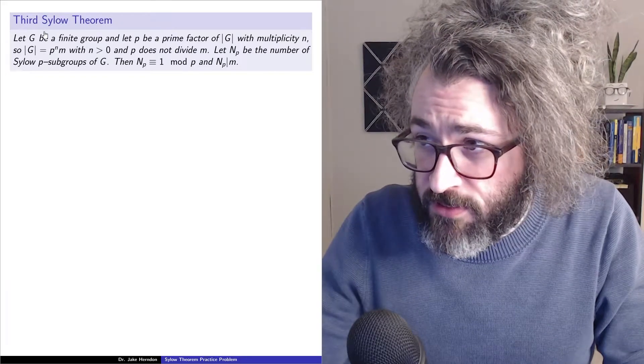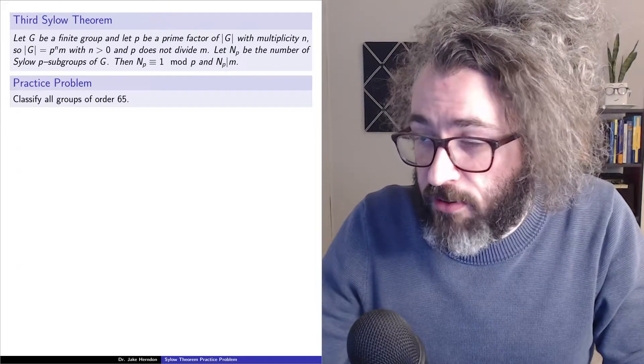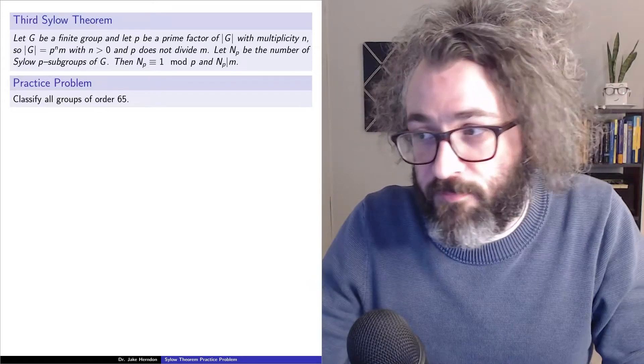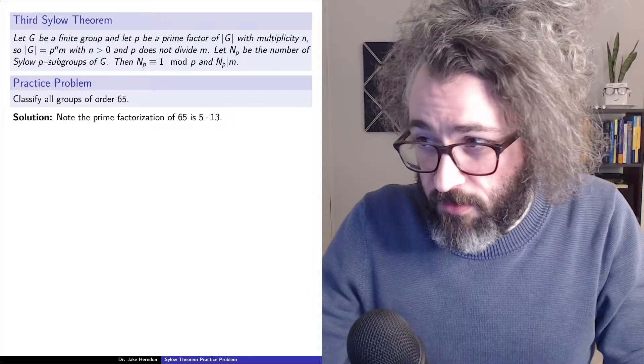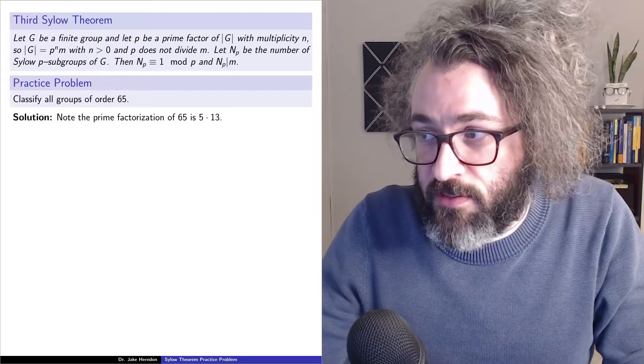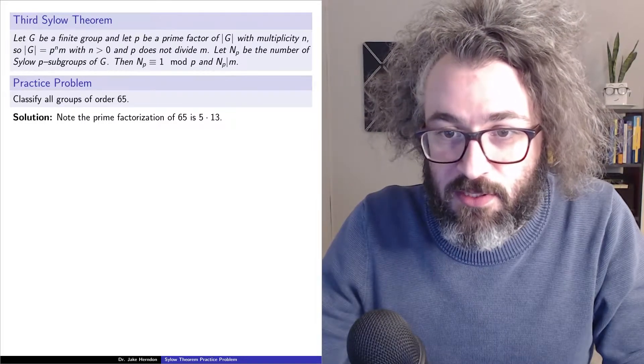So I'll show you how to use this theorem to classify all groups of order 65. Start by noting that the prime factorization of 65 is 5 times 13.